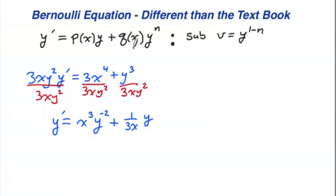Now, p of x and q of x in this are backwards. This is actually the p of x, 1 over 3x, because it's next to the y that is to a single power. And this is q of x because it's next to y that has a power other than 1.